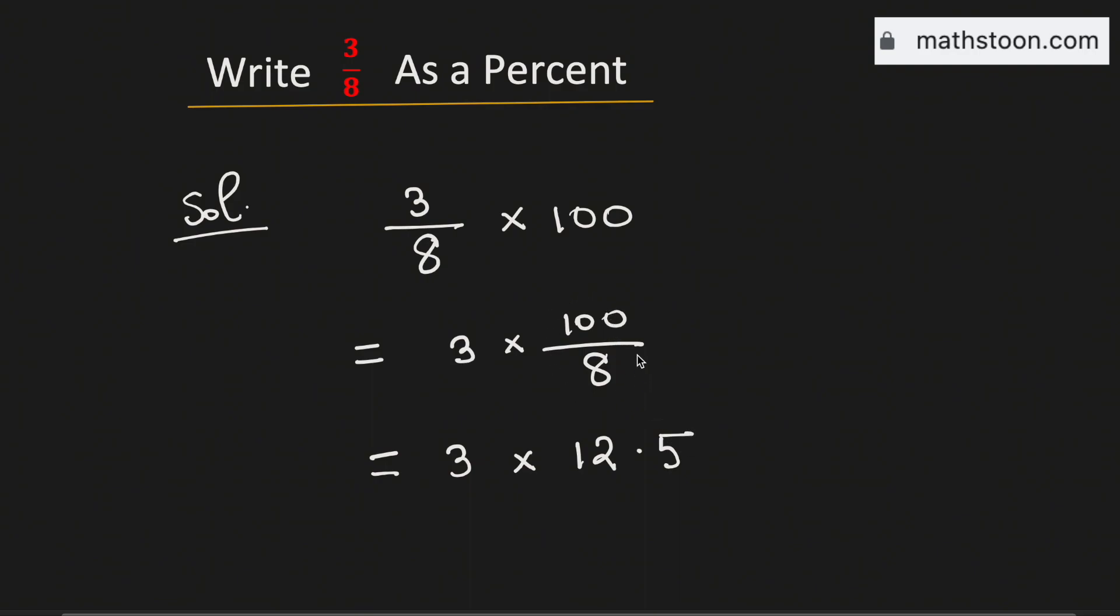So this fraction is now equal to 12.5. Now if we multiply this we will get 37.5.